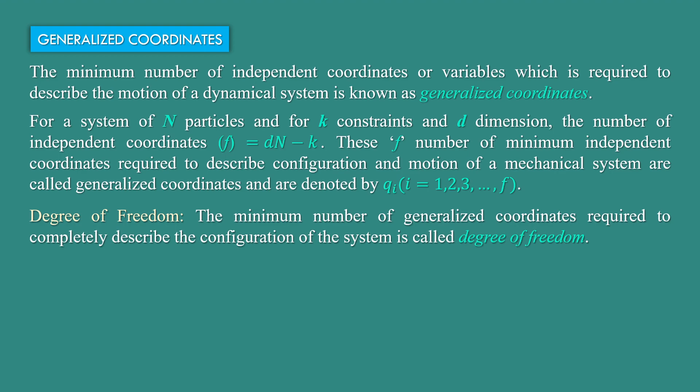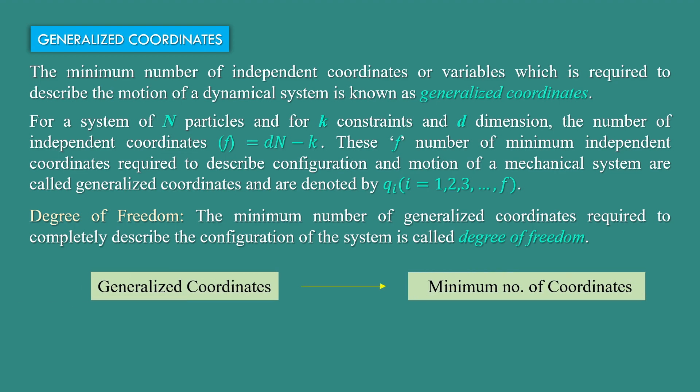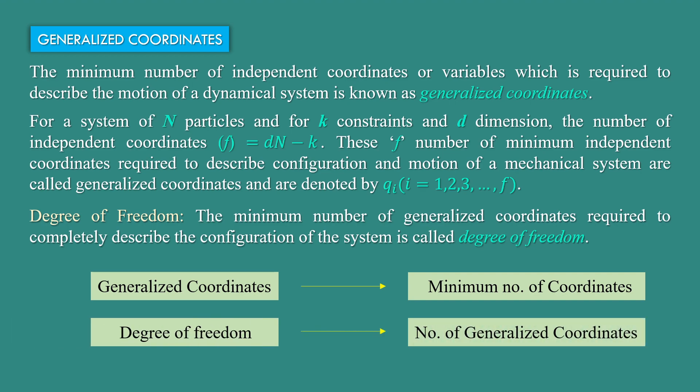Now, degree of freedom. The minimum number of generalized coordinates required to completely describe the configuration of the system is called degree of freedom. So, generalized coordinates means the minimum number of coordinates, and degree of freedom means the number of generalized coordinates.